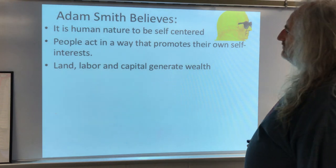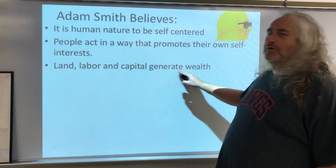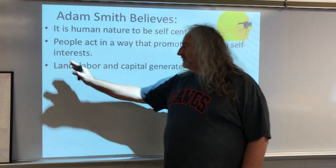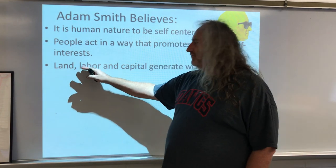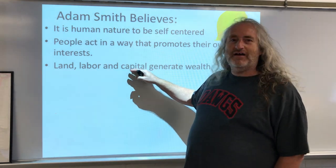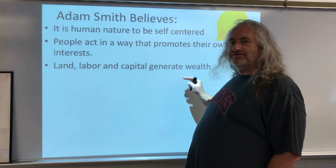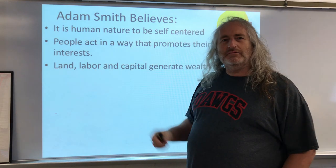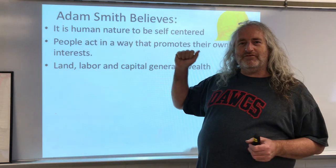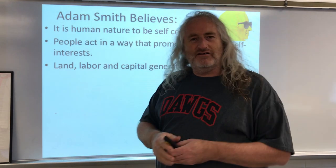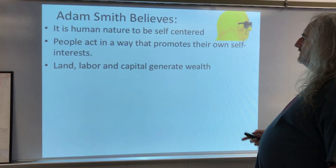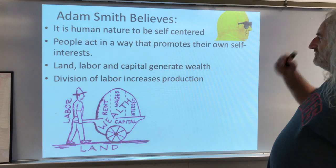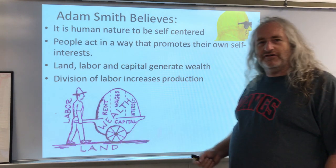Other things Smith will say: where does wealth come from? Well, from land, labor, and capital. If you own natural resources, you have people to work, and you have tools and machinery, then you're going to generate wealth. You may ask, where's entrepreneurship? Well, Smith came up with the land, labor, and capital idea, and later we'll add in entrepreneurship. Another thing he will say is the division of labor increases production — that goes back to the whole assembly line idea.